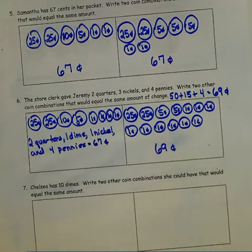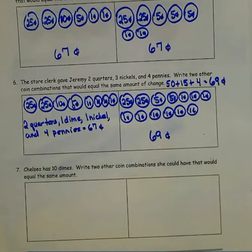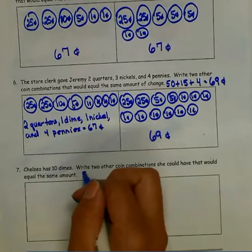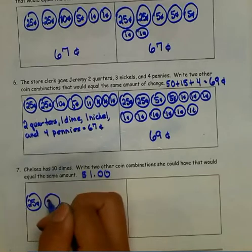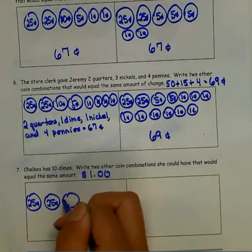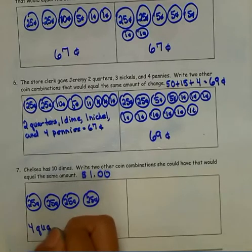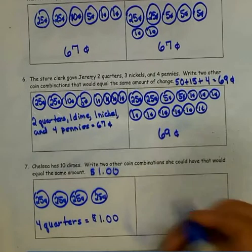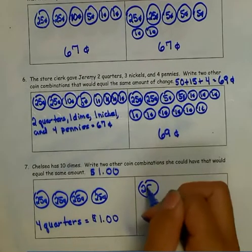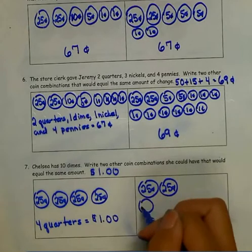Number 7 — Chelsea has ten dimes. Find two other coin combinations she could have that would equal the same amount. Ten dimes equals one dollar. I could use four quarters, and four quarters equals one dollar. Or I could use two quarters, which gives me fifty cents, and five dimes, which gives me another fifty cents.